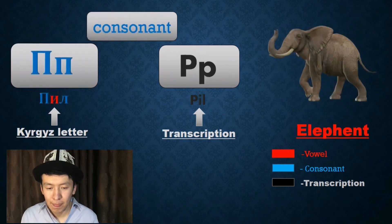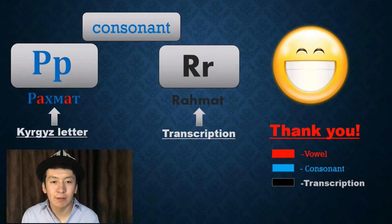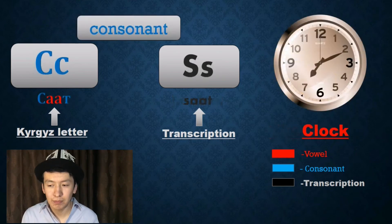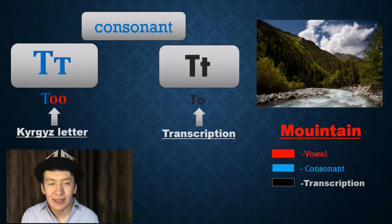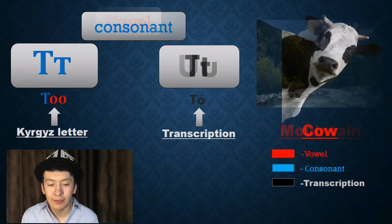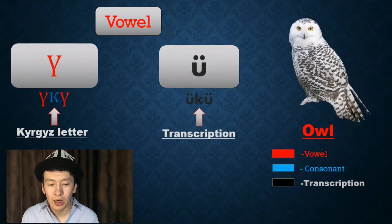P — Pil, Elephant. R — Rahmat, Thank you. S — Saati, Clock. T — Too, Mountain. U — Uy, Cow. Ü — for example, Owl.